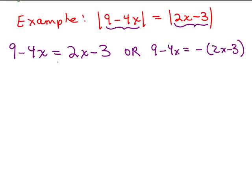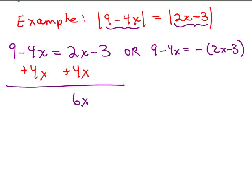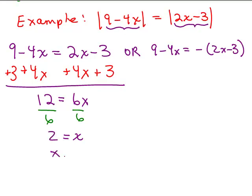For the first equation, I'll put the variables on the right-hand side so I have a positive number in front of x. I'll add 4x to both sides, then add 3 to both sides. On the left side, 9 plus 3 is 12, so I have 12 equals 6x. Dividing both sides by 6 gives x equals 2. That's the solution when the two expressions inside the absolute value are equal to each other.